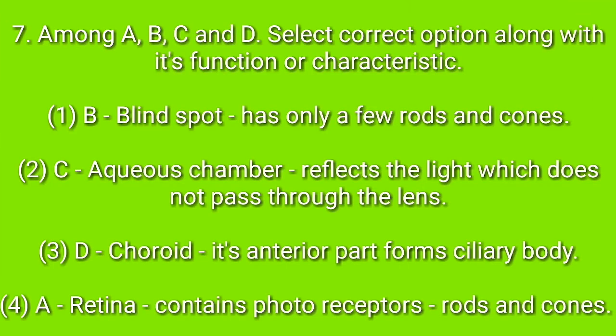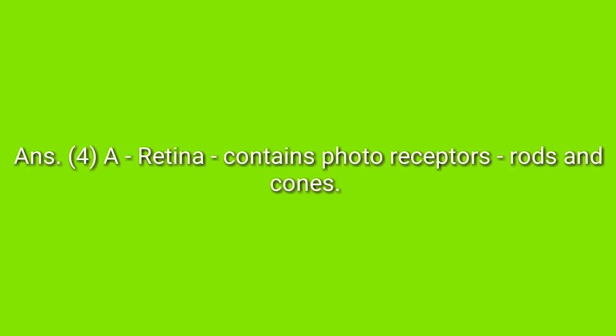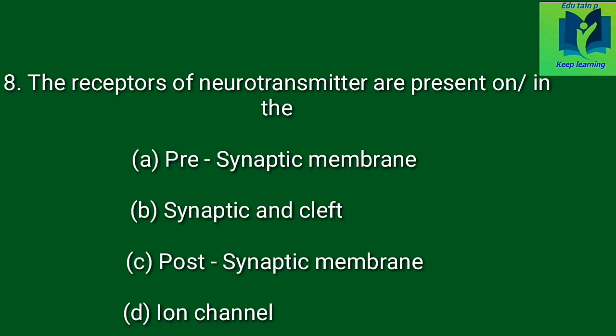Among A, B, C and D, select the correct option along with its function or characteristics. The image will appear after this question. Option A: retina contains photoreceptors, rods and cones.